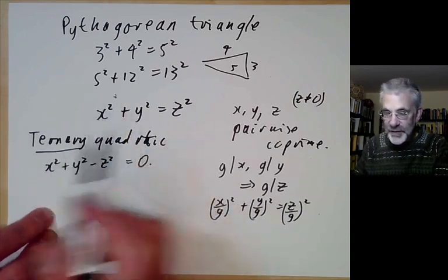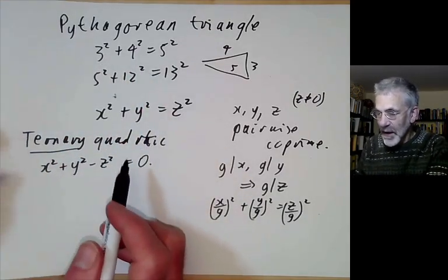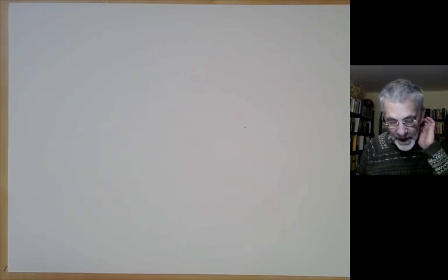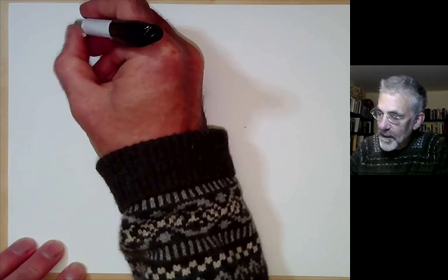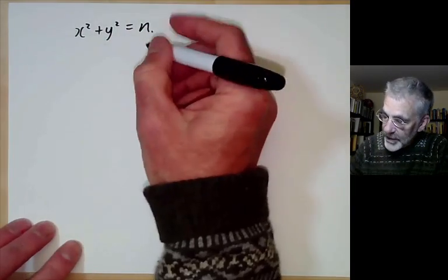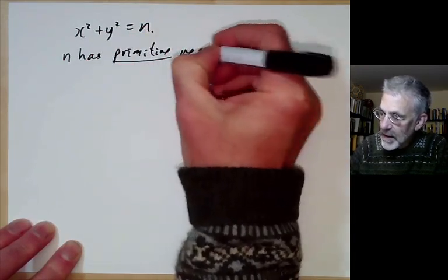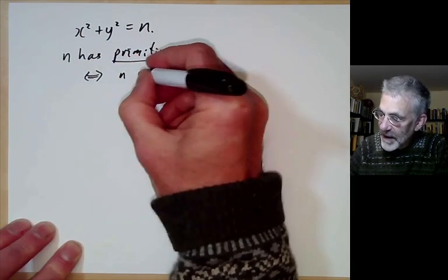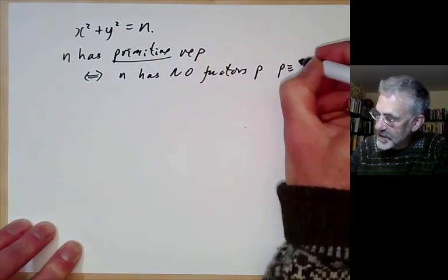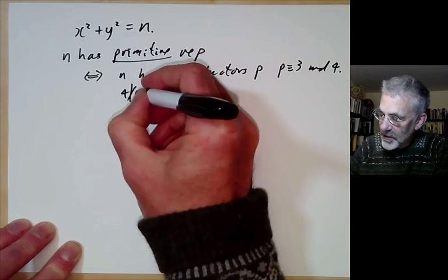We're going to use the ideas covered in previous lectures to study this equation, and we'll actually have four different methods of looking at the solutions. First, we're going to use the theory for the binary quadratic form x squared plus y squared equals n. We recall that n has a primitive representation if and only if n has no prime factors p of the form p congruent to 3 mod 4, and 4 does not divide n.